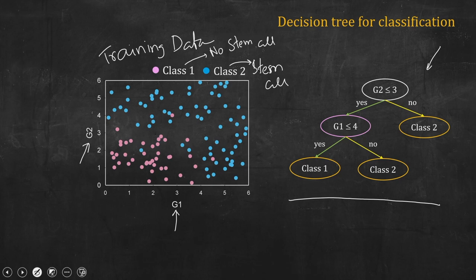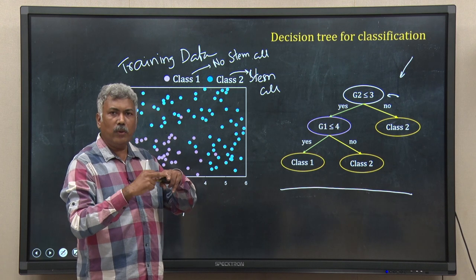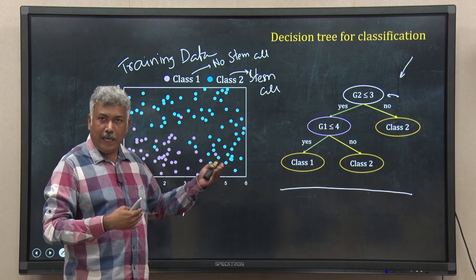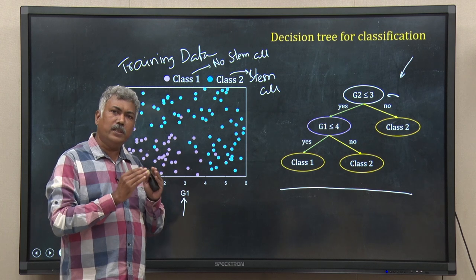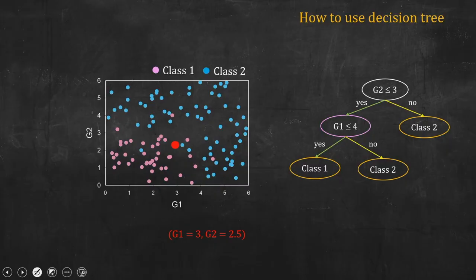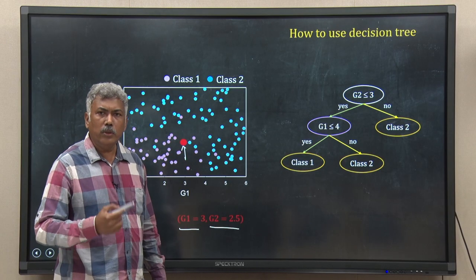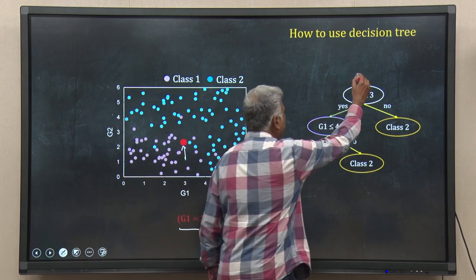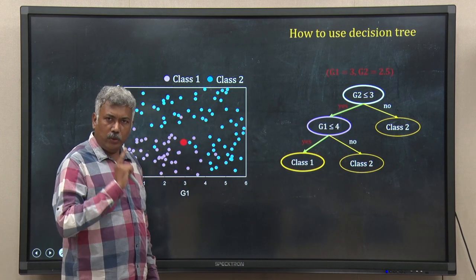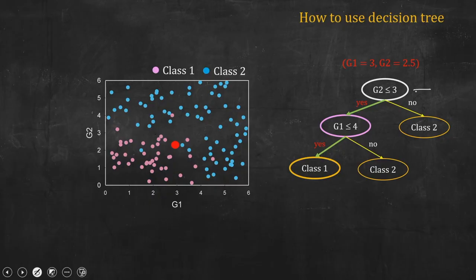This decision tree is binary because at every node a question is asked with a yes/no answer. Let us see how we use this tree classifier to classify a test data. I have a test data — the red dot — with values G1 = 3, G2 = 2.5. I take this data at the root node and check the first question: is G2 less than or equal to 3? G2 is 2.5, so yes. I follow this yes path, marked in red.